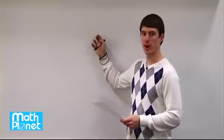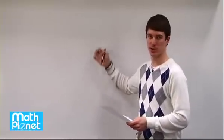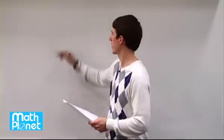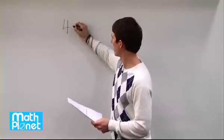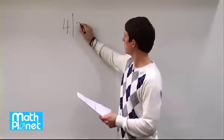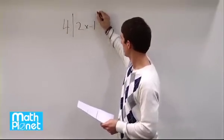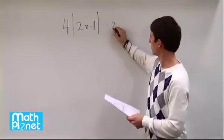Here we have an algebraic equation with an absolute value in it, so we're going to try and solve it in the normal way and see what we do with these absolute values. So we have 4 times the absolute value of 2x minus 1, all minus 2 equals 10.